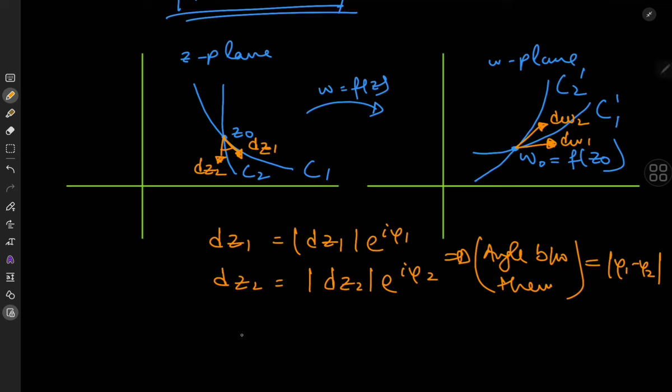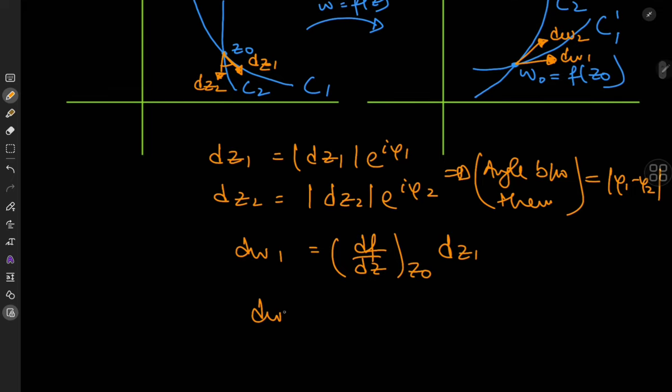So we can write dw1 equals df by dz evaluated at z0 times dz1 and dw2 equals df by dz evaluated at z0 times dz2.